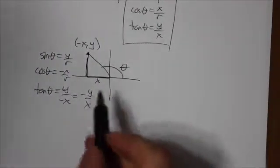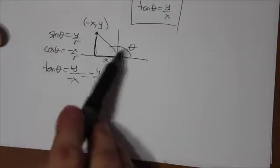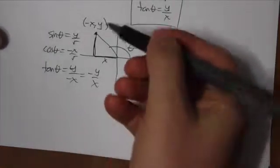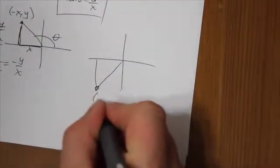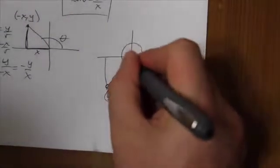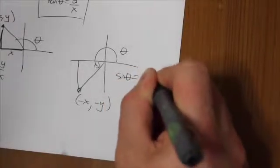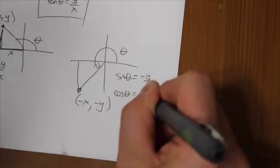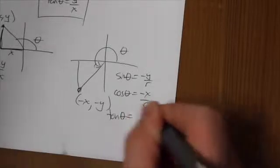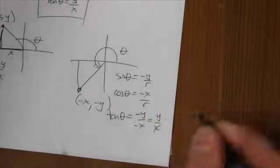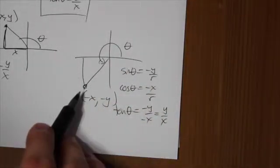We've reflected that point over to the second quadrant, where sine is positive but cosine and tangent are negative. Now we're reflecting it again over the x-axis so the point is down here at negative x, negative y. The rotation angle puts the terminal arm in the third quadrant. Sine of theta is negative y over r, cosine is negative x over r — both negative. Tangent, however, is negative y over negative x, and those negatives cancel, giving a positive value. So in the third quadrant, only tangent is positive.